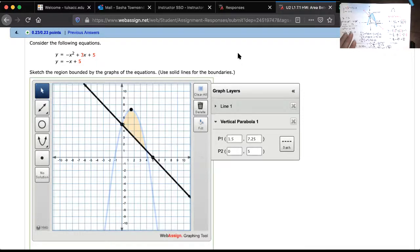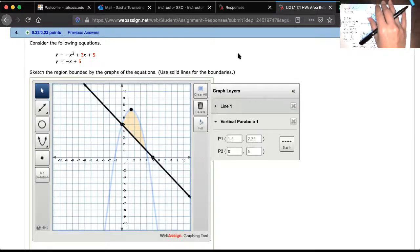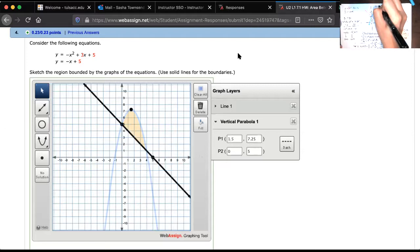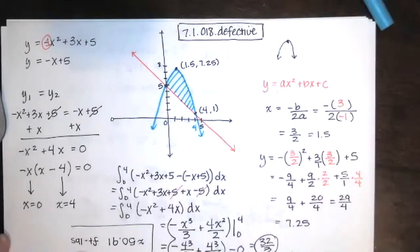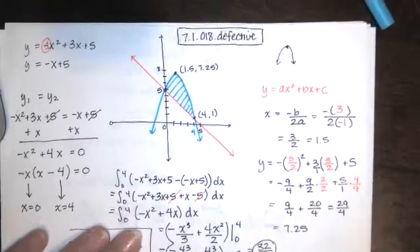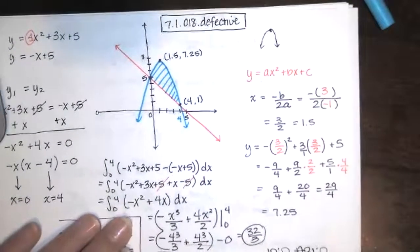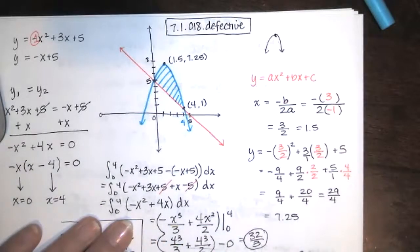So, again, I did not see it at the very beginning, but this is problem 7.1.018.defective, according to WebAssign. From the Larson and Edwards Calculus Early Transcendental Functions text, 7th edition. I don't know if it just used to be defective and it's not defective anymore, but it worked for me this time. And hopefully this outline of a method works for you, too. Please let me know if you have questions.